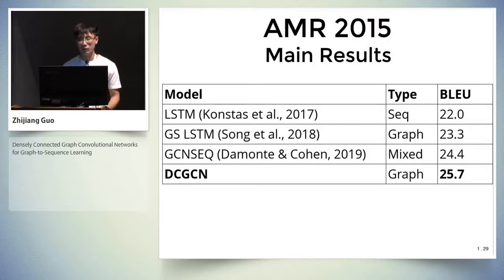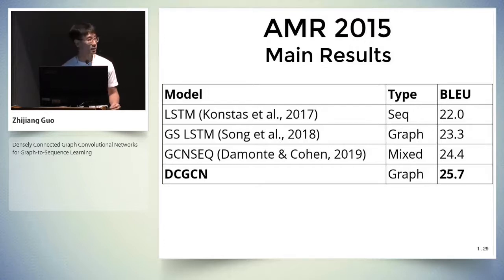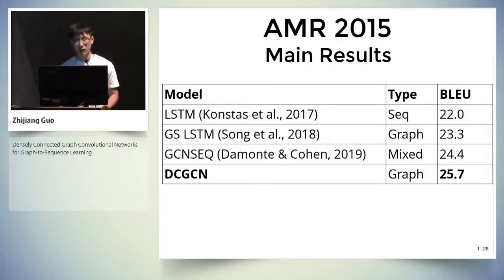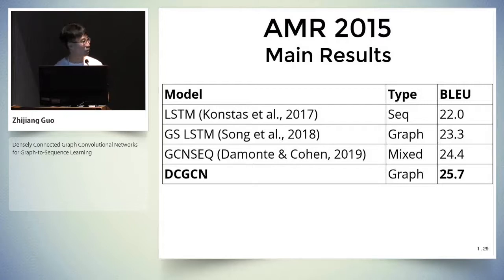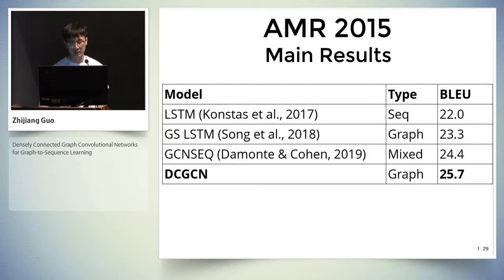Here are the main results on the AMR-2015 dataset. Baselines include a sequence encoder, recurrent graph encoder, and mix encoder — where the mix encoder applies an additional LSTM after a two-layer GCN model. Our proposed model, which solely relies on graph convolutional layers, is able to achieve a higher BLEU score on this dataset.